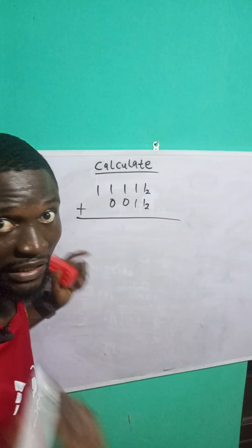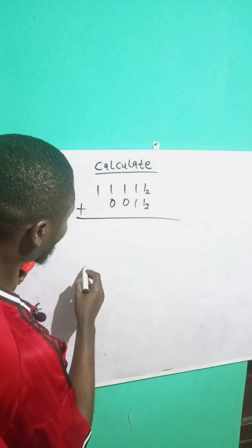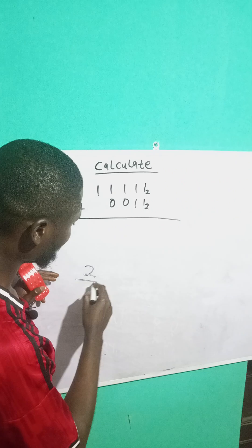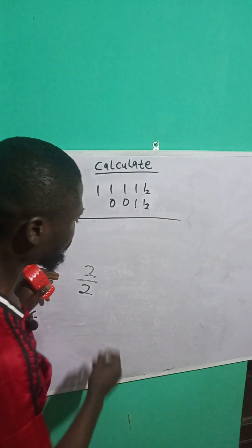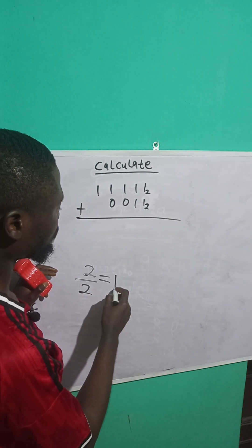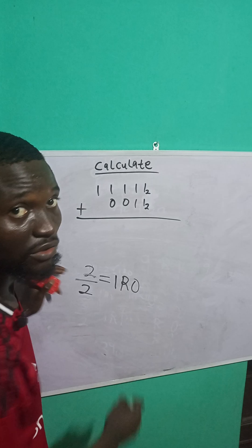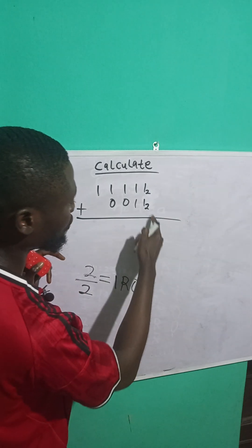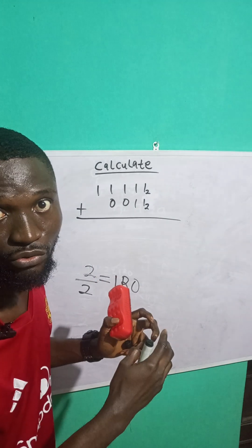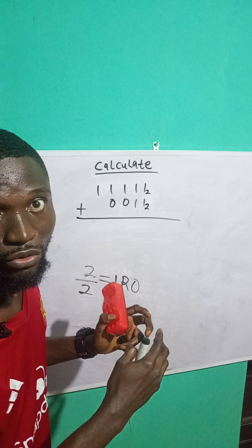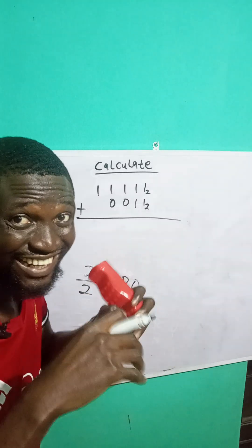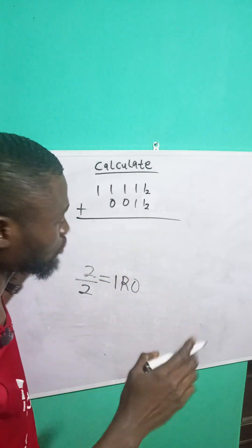1 plus 1 is 2, right? We got 2 as a result, so we are going to divide it by 2. 2 divided by 2 gives us 1 remainder 0. We can't write 2 here because this is base 2 — all numbers here must be less than 2. So the remainder of 0, we write it down, and the 1 we carry to the next level.